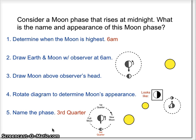So here are our steps that we went through in order. We figured out when the moon is highest. If it rises at midnight, it is highest six hours later at 6 a.m.